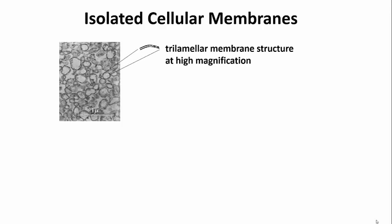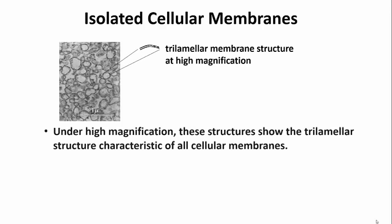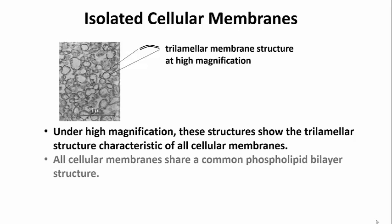At high magnification, membranes seem to be composed of three layers. This is called the trilaminar structure, and at the molecular level, it is the more familiar phospholipid bilayer.